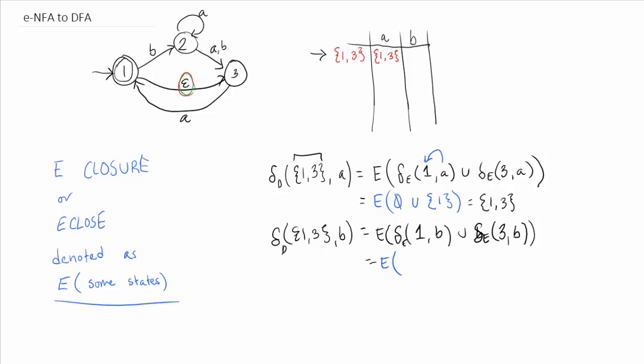So what happens when we get a B on 1? We move to 2. And yeah, that's it. Union. What happens when we get a B on 3? Nothing. So that's just the empty set. What is the e-closure of 2? It's just itself as we went over earlier. So I can put that in our table.